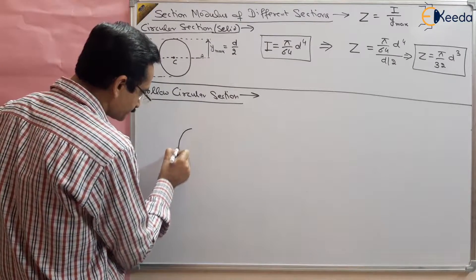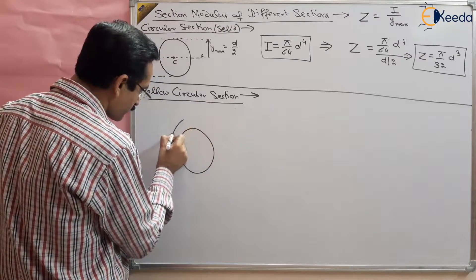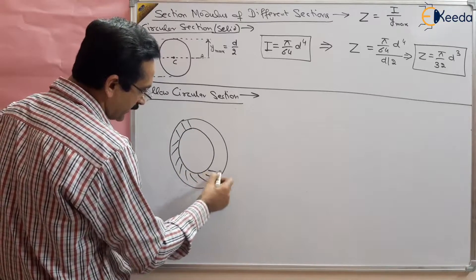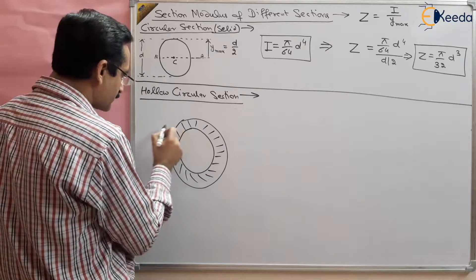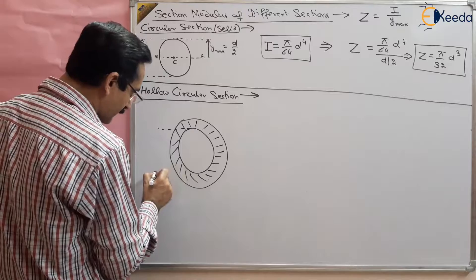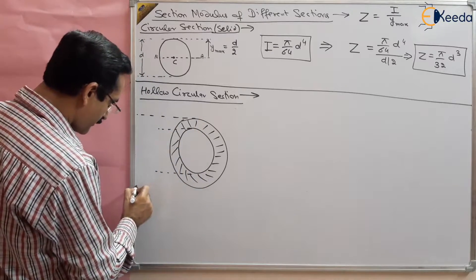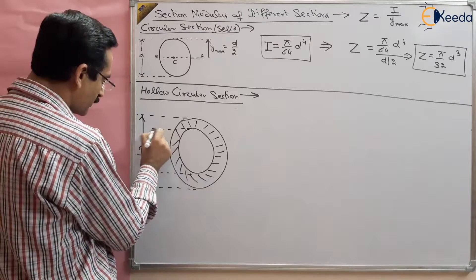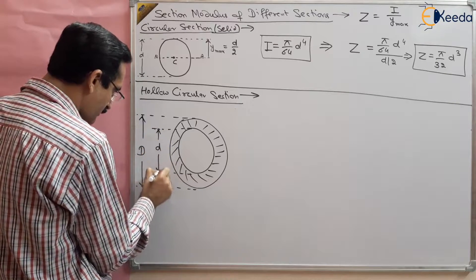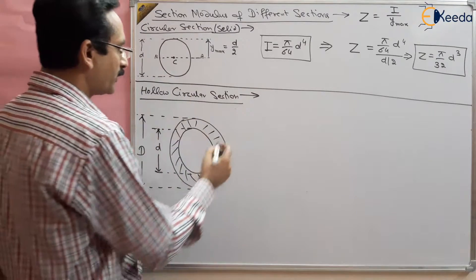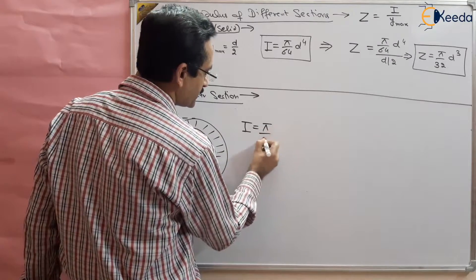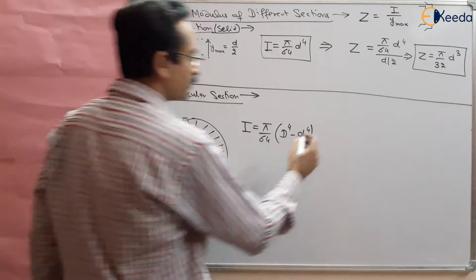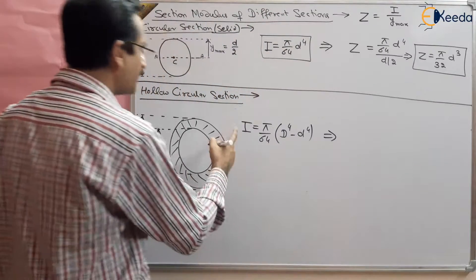Suppose this is a hollow circular section — it has material in the outer part and is hollow inside. The inner diameter is small d and the outer diameter is capital D. The moment of inertia of this hollow section is I = π/64 × (D⁴ − d⁴).